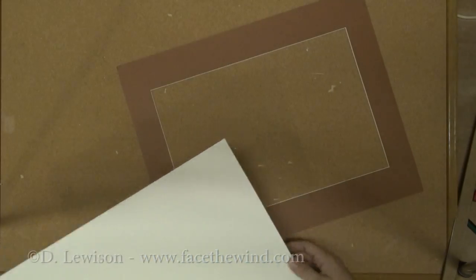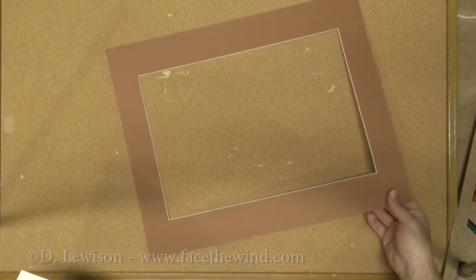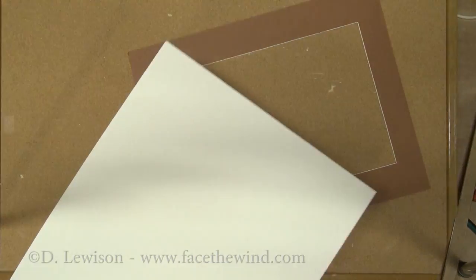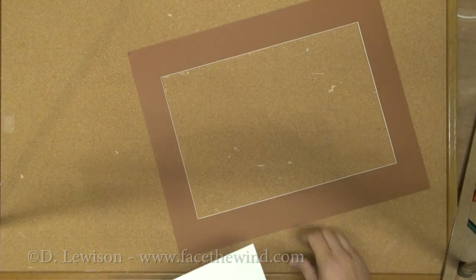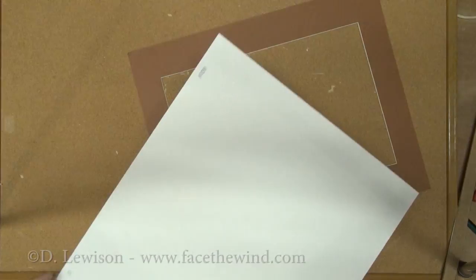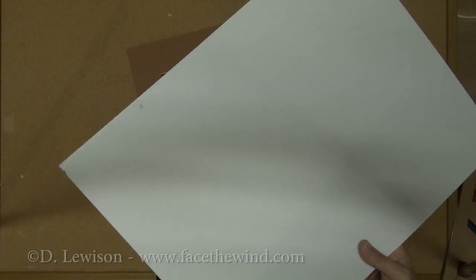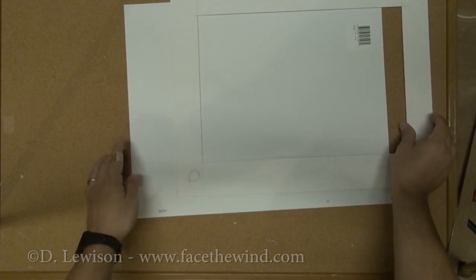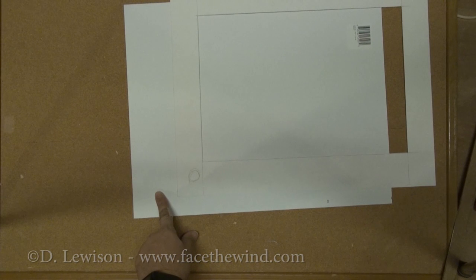So to add the white now, I basically follow the same exact procedure only now I'm using the middle mat as my template. So here's the white. I'm going to flip it over.